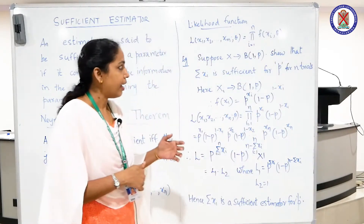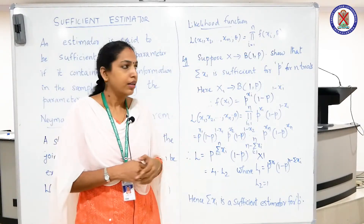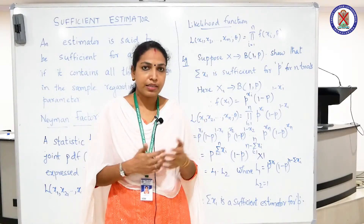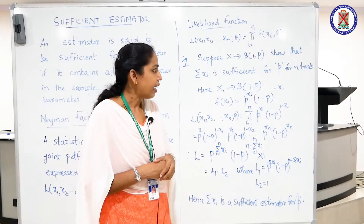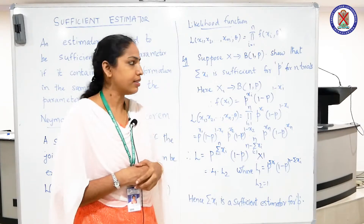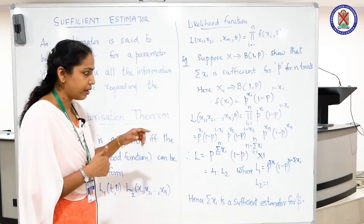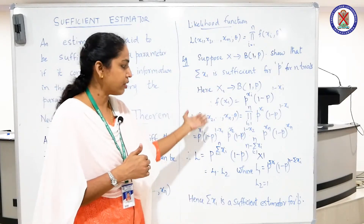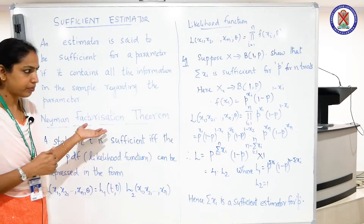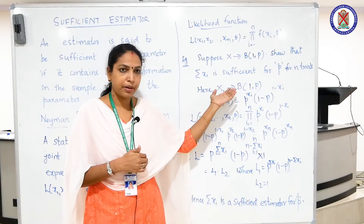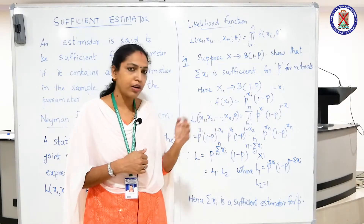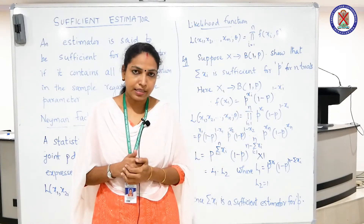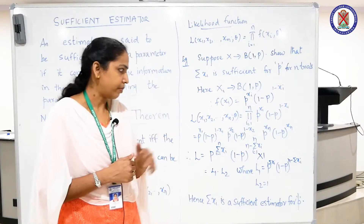The likelihood function is the product of the density functions. We take a sample from a Bernoulli trial and we do that trial n times, and we want to show that summation of xi is sufficient for the parameter p. If xi follows Bernoulli(p), then the density function of xi is f(xi) = p^xi * (1 - p)^(1 - xi), where xi takes values 0 and 1.